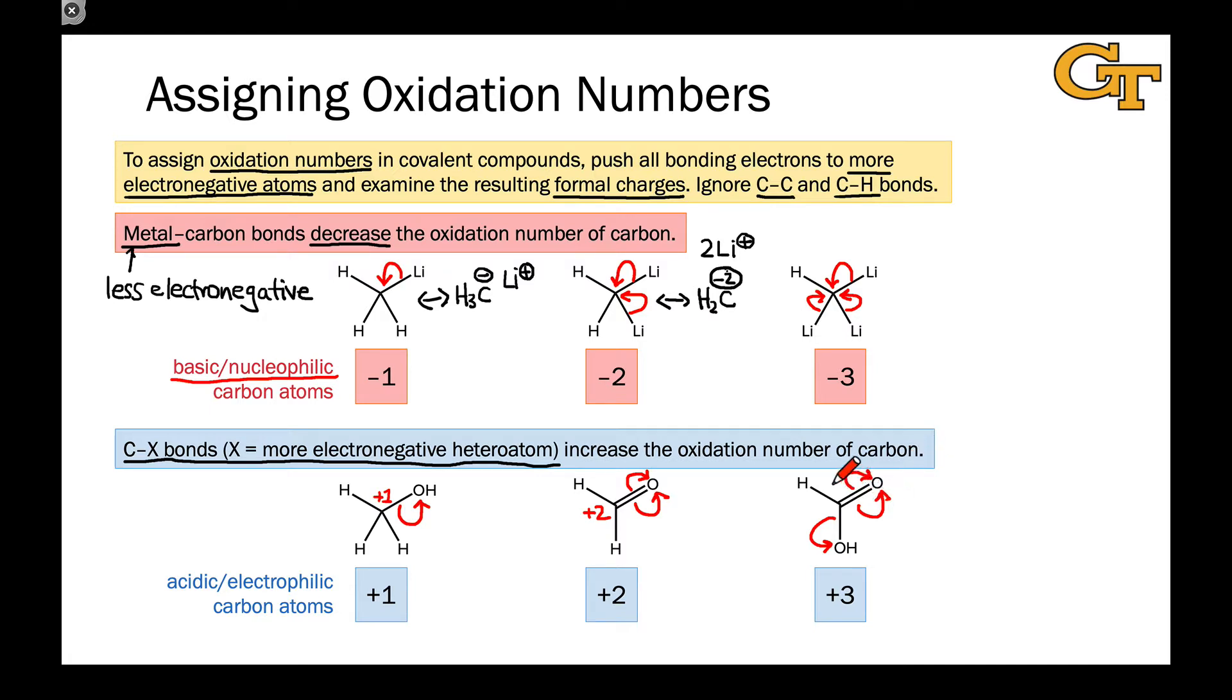And here we're pushing all three bonding pairs of electrons toward the more electronegative oxygen atoms, and this would result in a charge of plus-three in the resulting resonance structure. And so the formal oxidation number is plus-three.